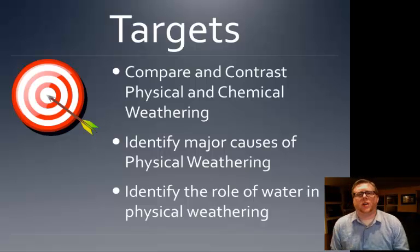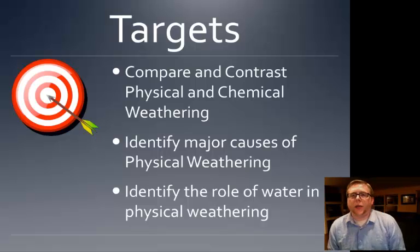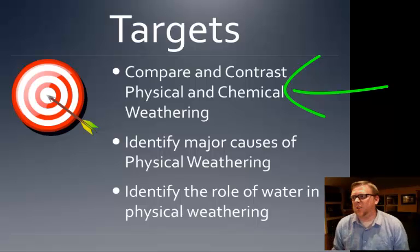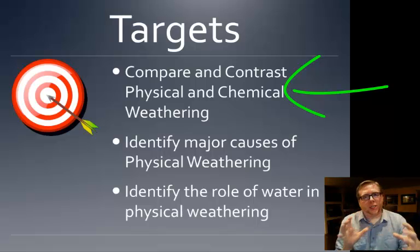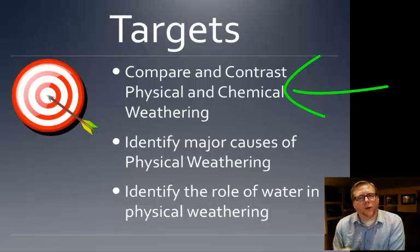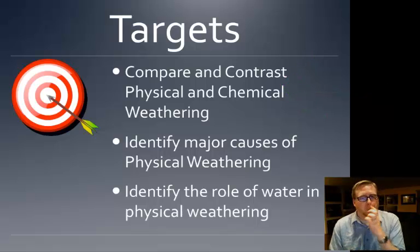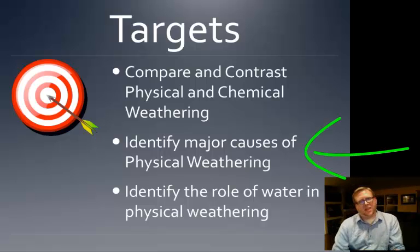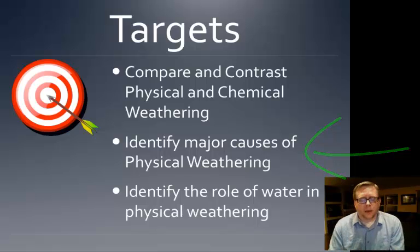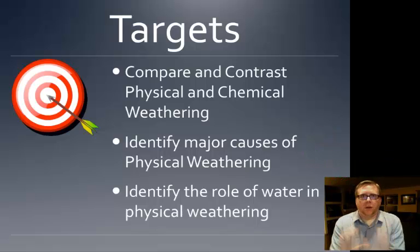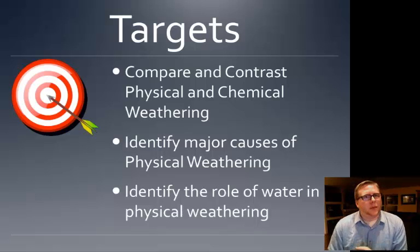Let's review what we talked about today. We compared and contrasted physical and chemical weathering — physical weathering keeps rocks made of the same material but just changes their size, while chemical weathering, as we'll see in the next video, changes the material inside the rock. We identified major causes of physical weathering: humans, animals, plants, sometimes the sun or wind, and definitely water — glaciers, freeze-thaw, and abrasion like what's happening in a river.